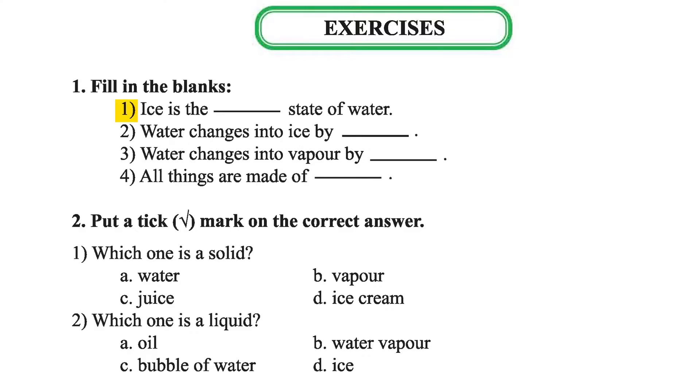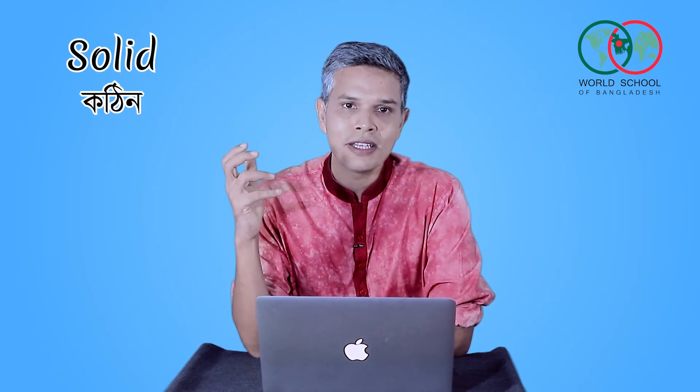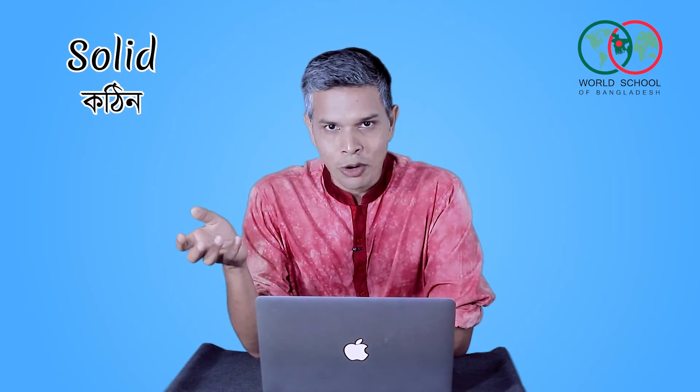Number 1: Ice is the blank state of water. We have learned that the state of water is water. Ice is the blank state of water. Ice is the solid state of water.